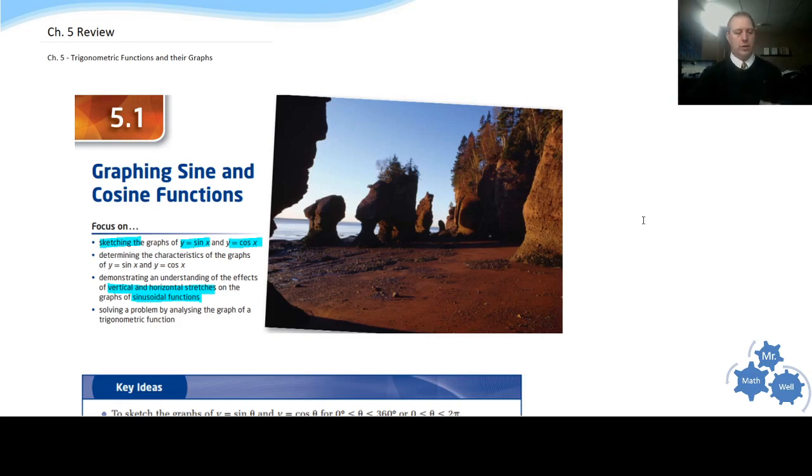So 5.1, if you recall, talks about graphing sine and cosine functions. When we talk about sinusoidal functions, we're talking about sine and cosine. The reason why is because sine generally has a shape like this, and cosine generally has a shape like this. And if you notice, they're really the same. The cosine and sine are just shifted versions of each other. So sine and cosine are both called sinusoidal graphs.